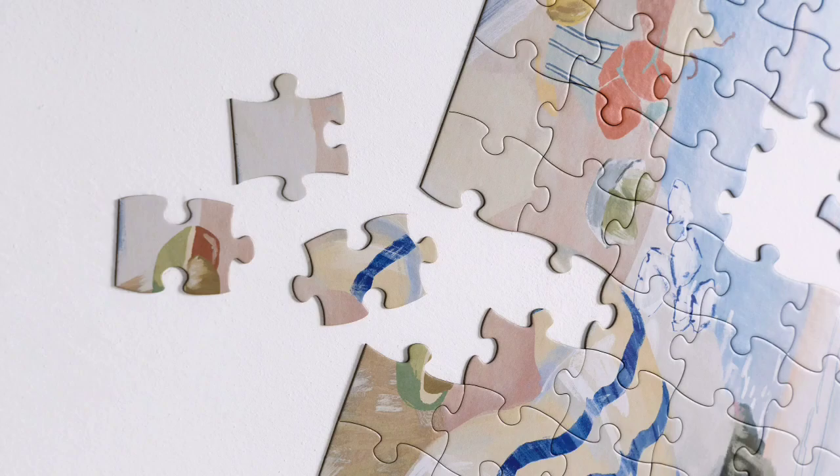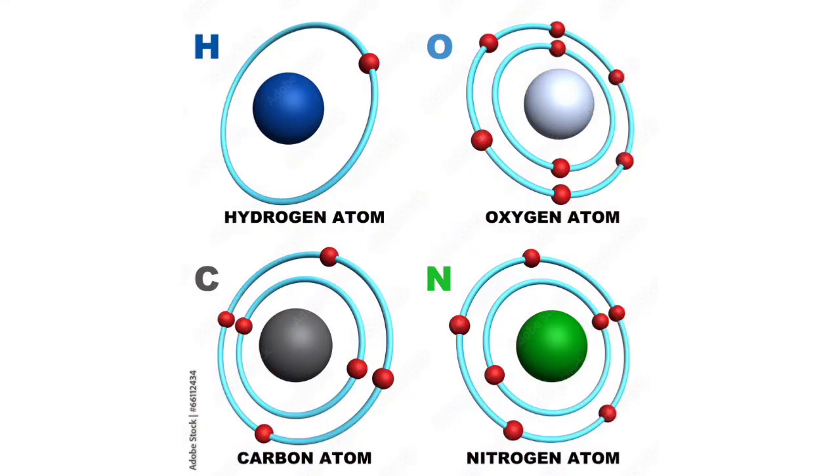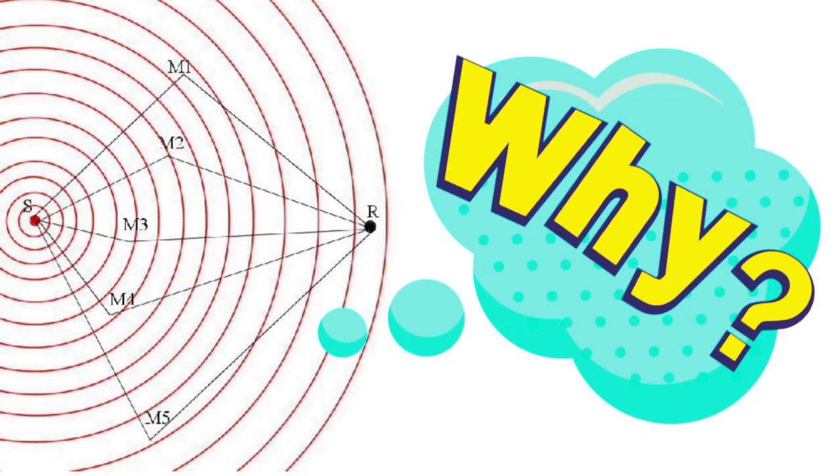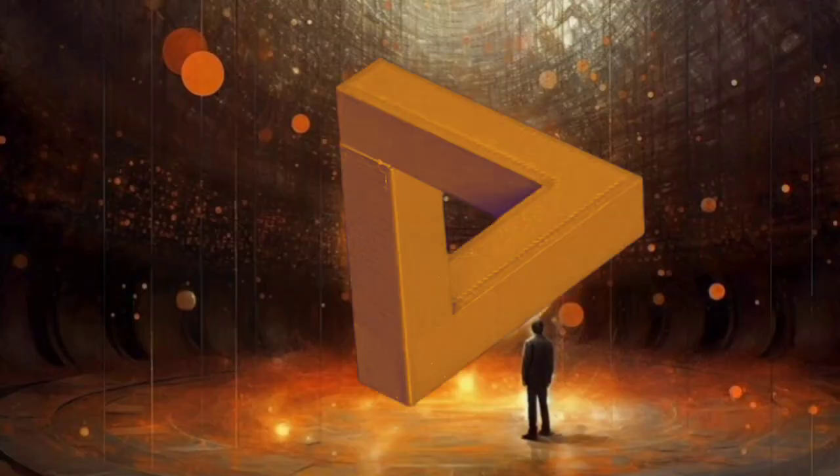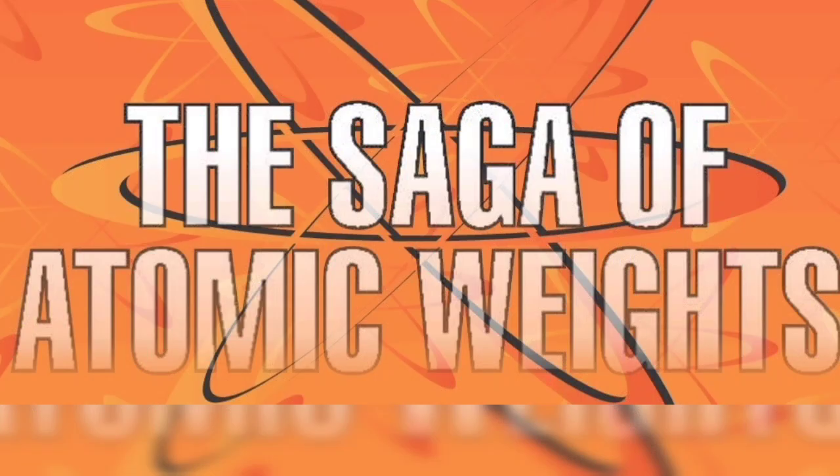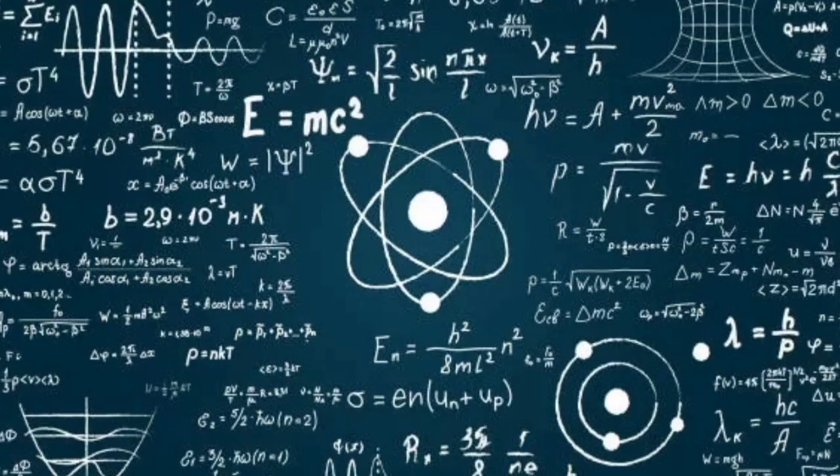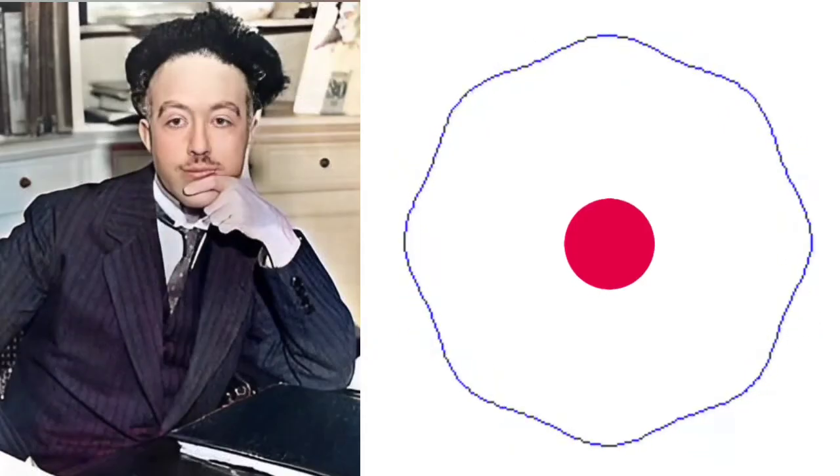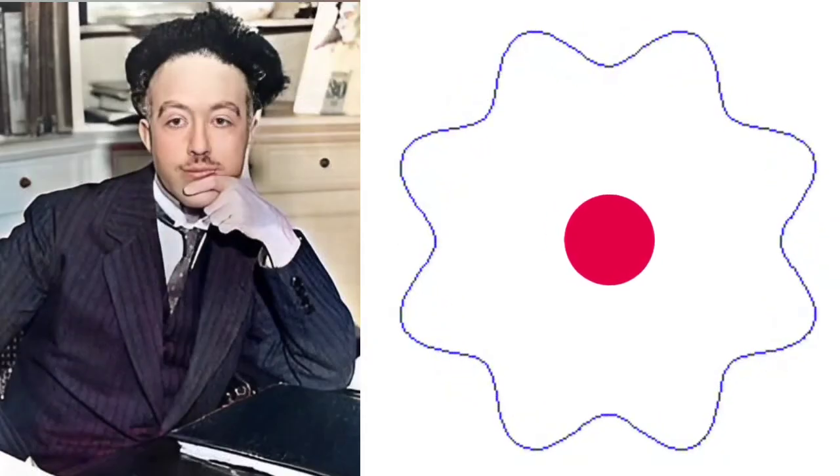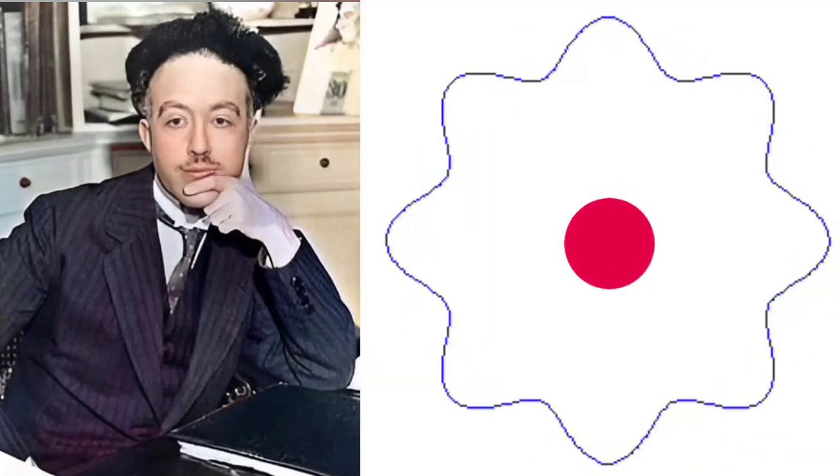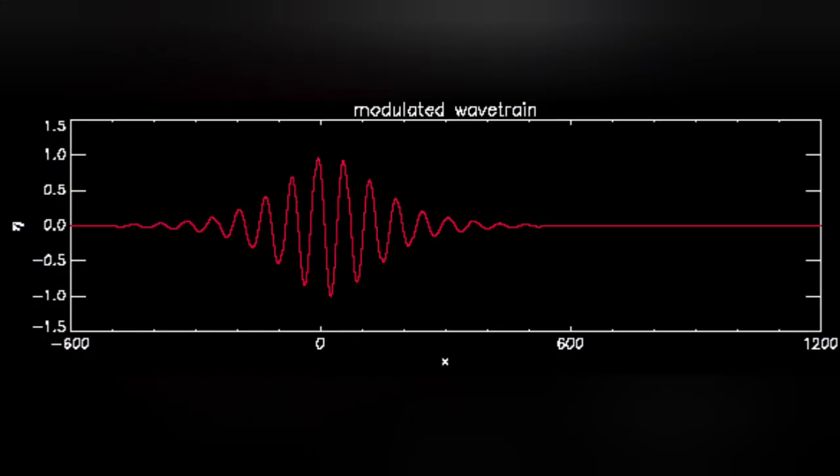That was a huge leap, but it still didn't explain why electrons were restricted to those specific energy levels. Why couldn't they exist anywhere in between? That's where things get even weirder. This is where our understanding of the atom takes a truly mind-bending turn.